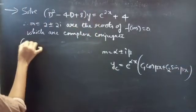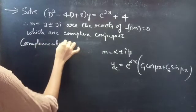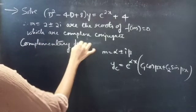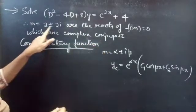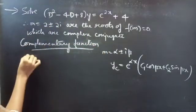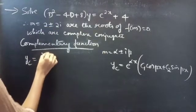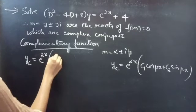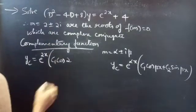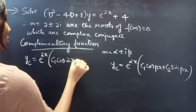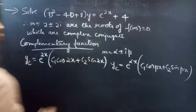Since we have complex roots m = 2 ± 2i, with real part α = 2 and imaginary part β = 2, the complementary function is yc = e^(2x)(c₁ cos 2x + c₂ sin 2x).